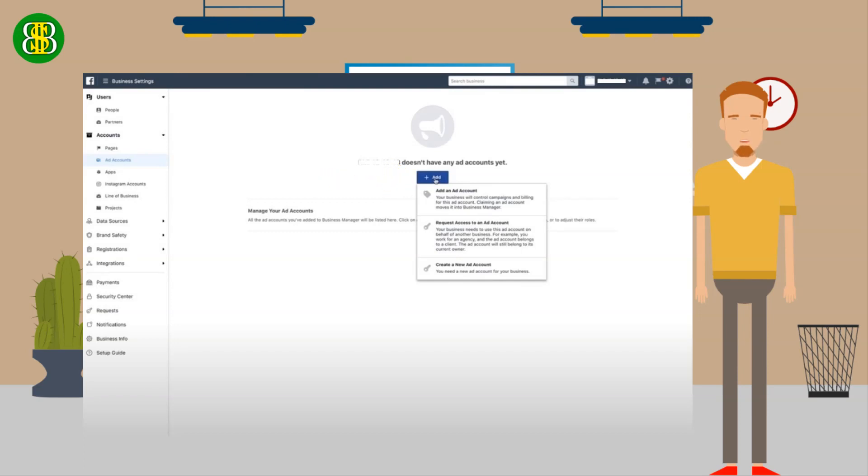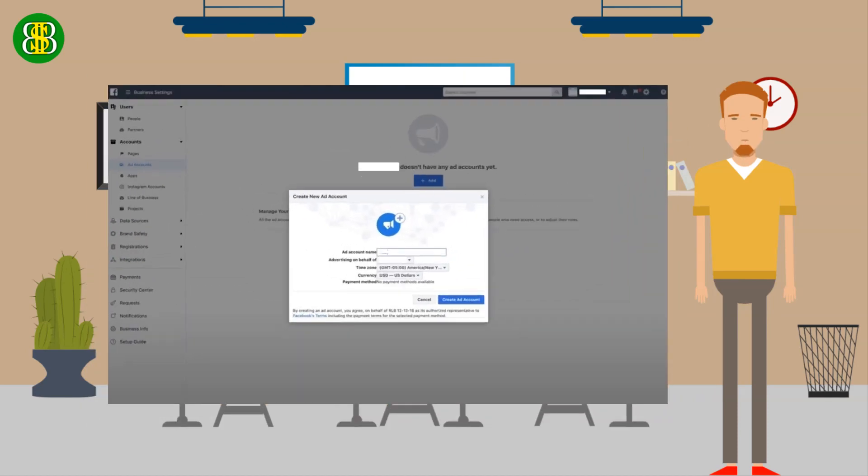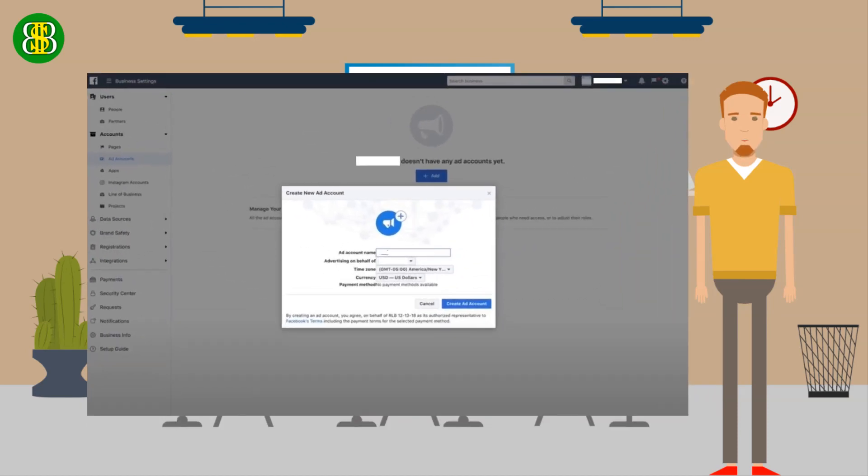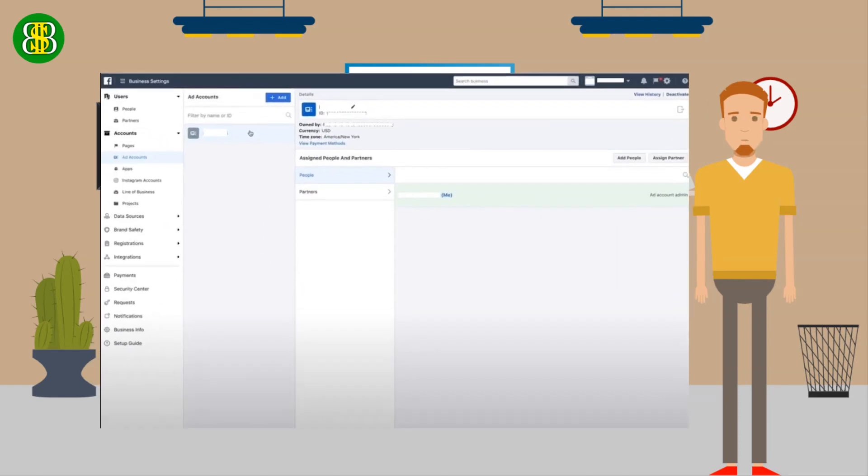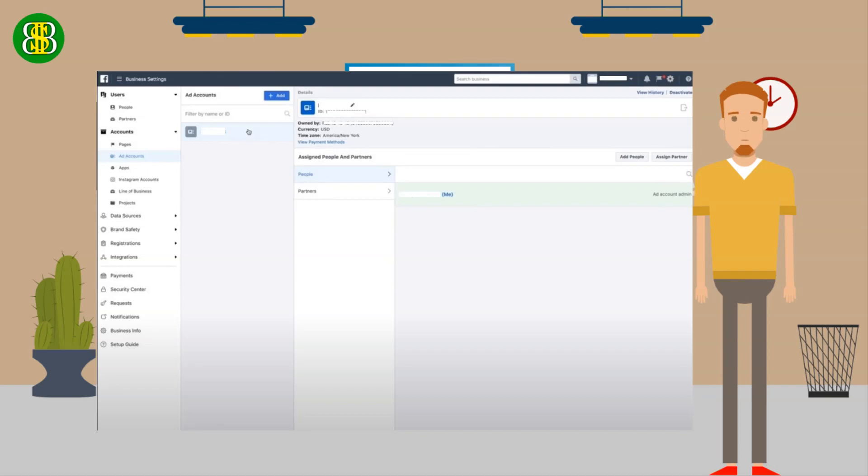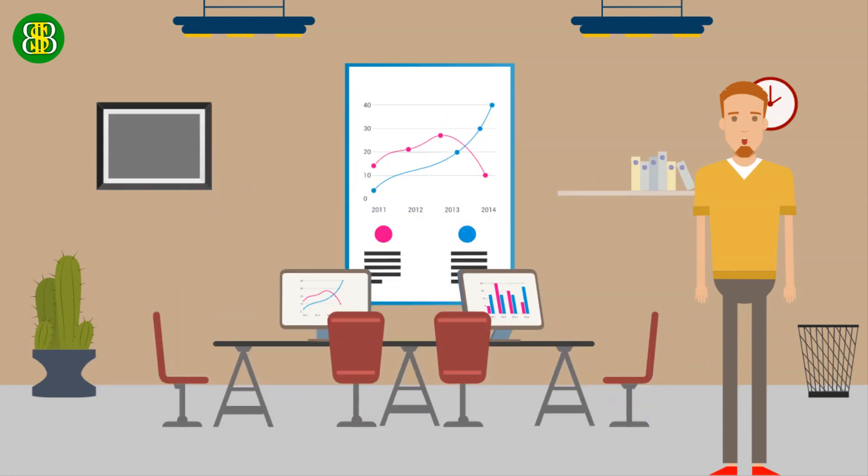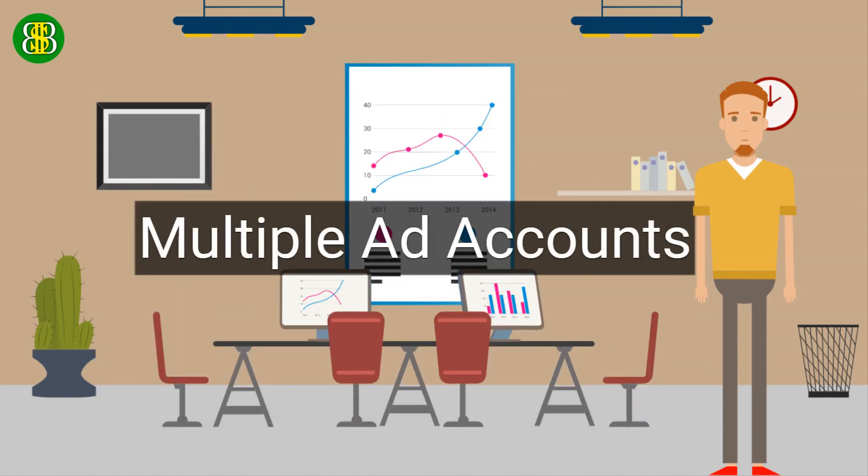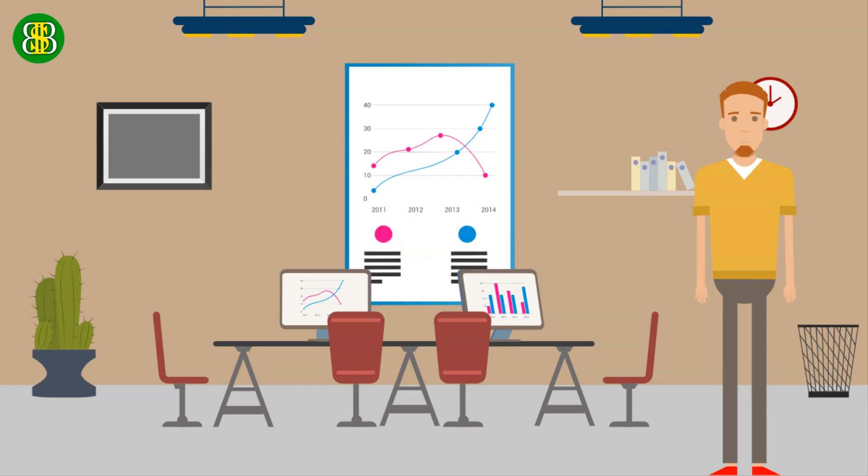Then choose create new ad account. A new window will pop up, just put the name you'd like on your first ad account, click the correct time zone you're in and the currency, then click create ad account. Then it's done and good to go.